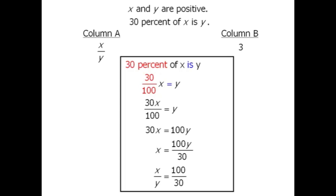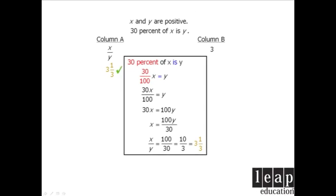Now we'll simplify 100 over 30. That equals 10 thirds which equals 3 and 1 third. So column A equals 3 and 1 third which is greater than column B, so our answer is A.